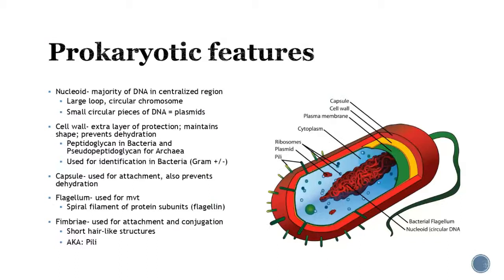Prokaryotes do have DNA, kept in what we call the nucleoid region — one circular chromosome smushed up into a region with no membrane-bound nucleus. They also have little circular pieces of DNA outside called plasmids, where they love to store antibiotic resistance genes, and they can share these plasmids with each other easily — that's how huge populations resistant to antibiotics can form so rapidly. They have a plasma membrane, and uniquely, a cell wall that gives extra protection, maintains shape, and prevents dehydration.